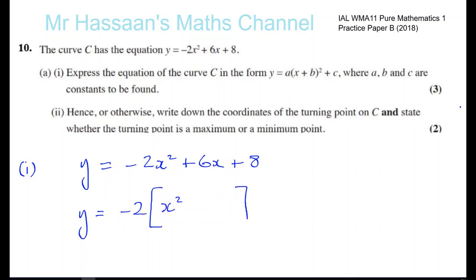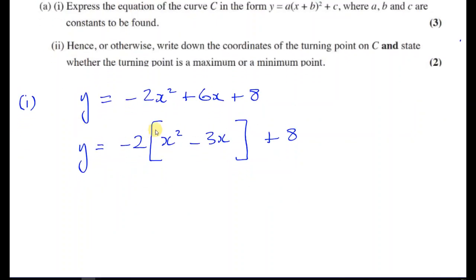I also want to do the same thing for the x term. I need to have the x squared and the x together inside the bracket, but I don't care about the plus 8 — I can write that at the end. So I'm going to close the bracket before the plus 8. What I write inside has to be consistent: minus 2 times something gives me 6x, so it's going to be minus 3x. Now this expression inside the bracket has just x squared without any coefficient except 1, which is exactly why I need to start completing the square.